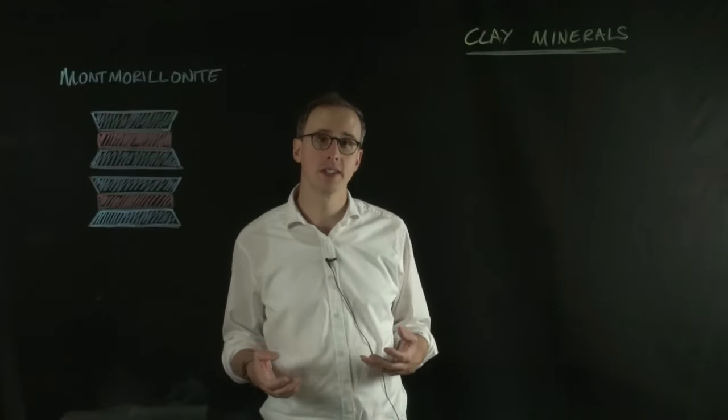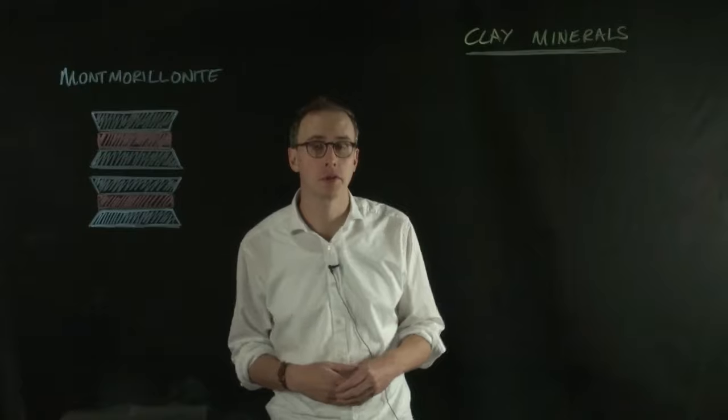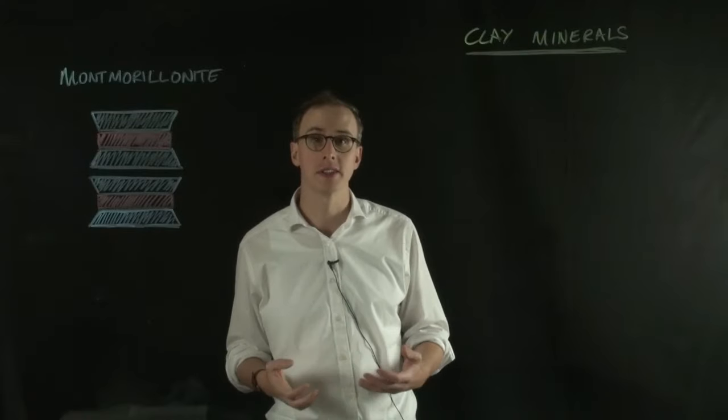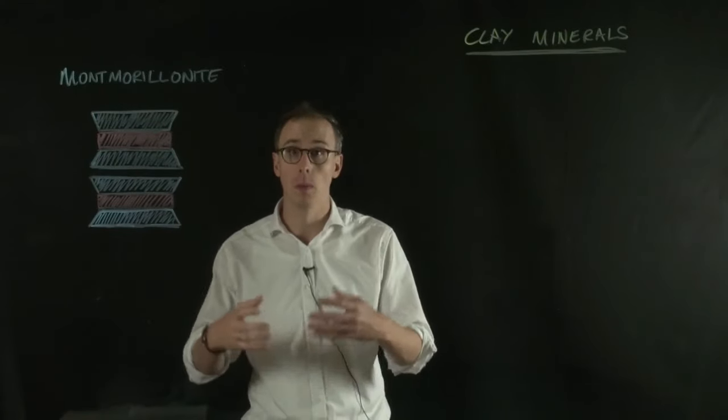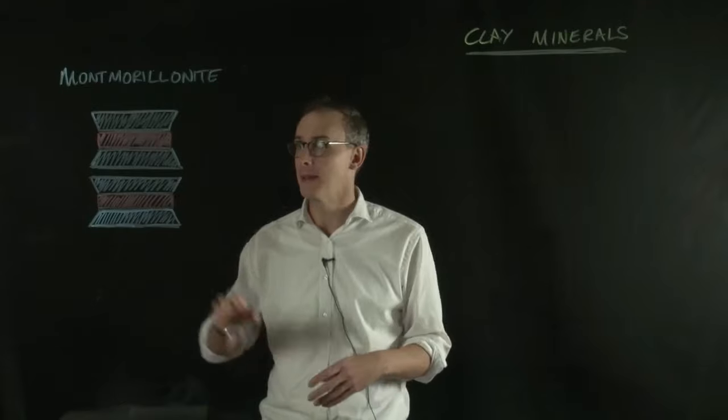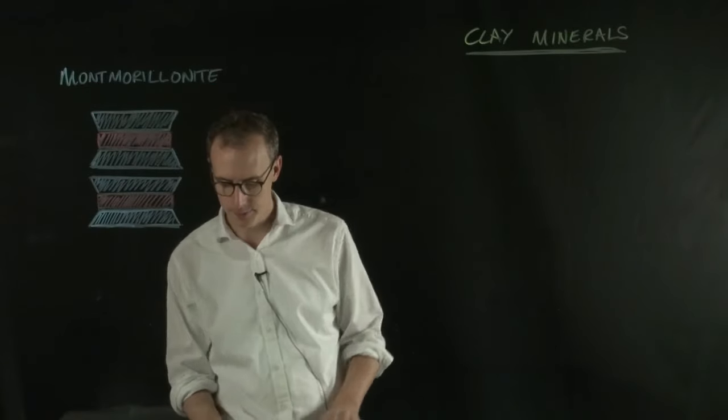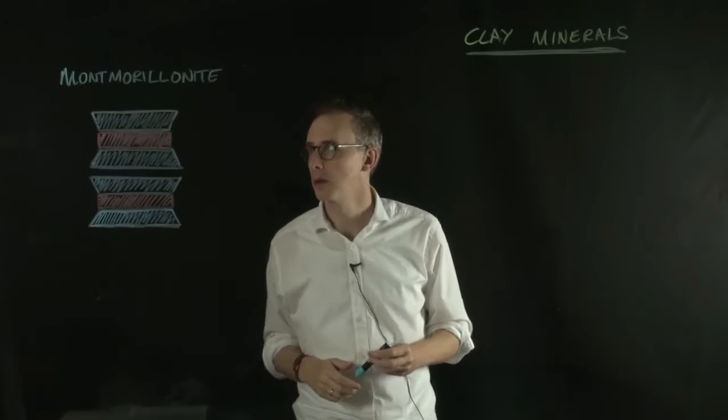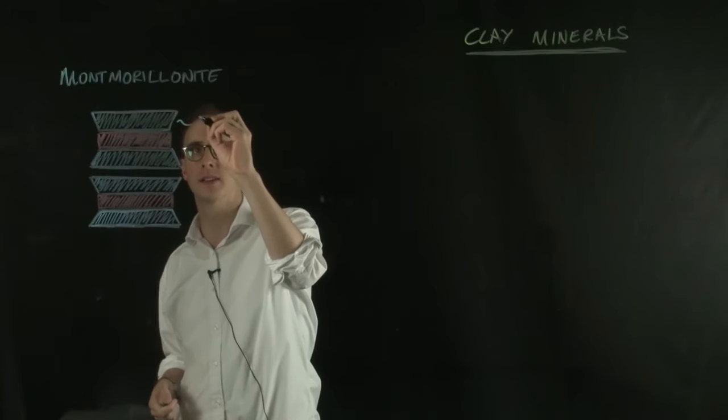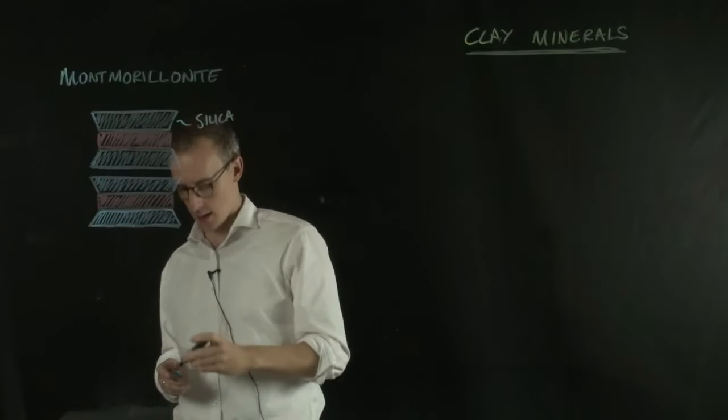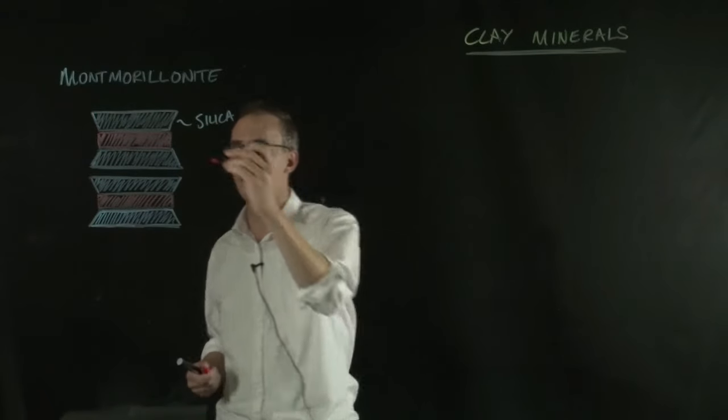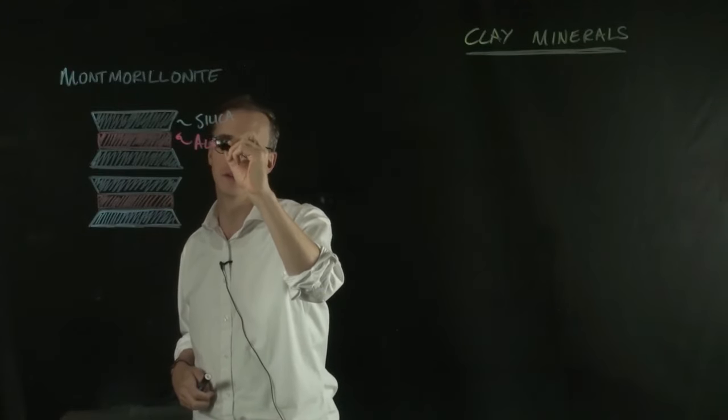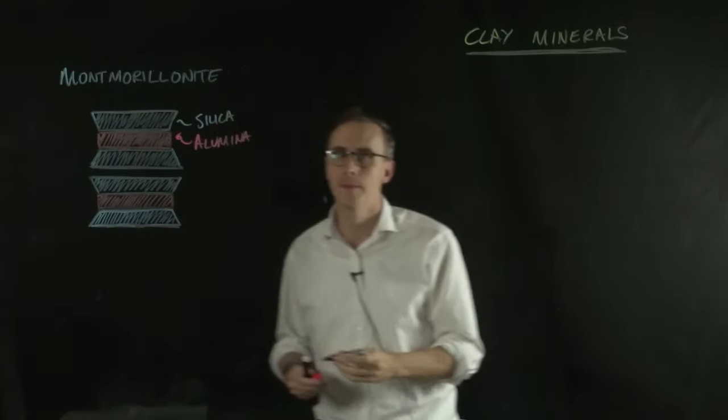The different arrangement of these sheets is really what gives rise to the different range of clay minerals that we can have. For instance, montmorillonite, which is part of the smectite group of clays, and it's what makes a bentonite clay, has an arrangement that looks like this. Instead of drawing out all of the atoms, I've just done it as a schematic where this blue trapezium represents the silica layers, and the red cuboid represents the alumina layers.